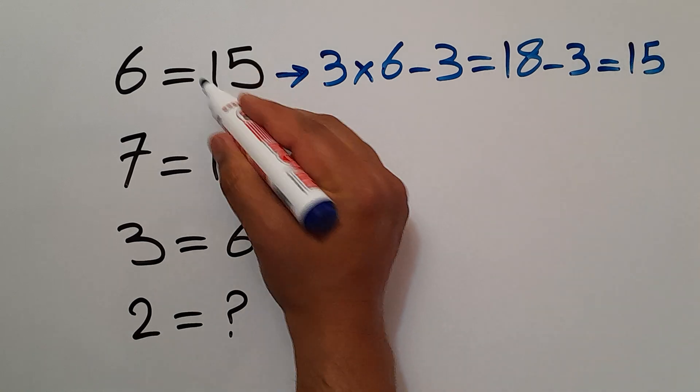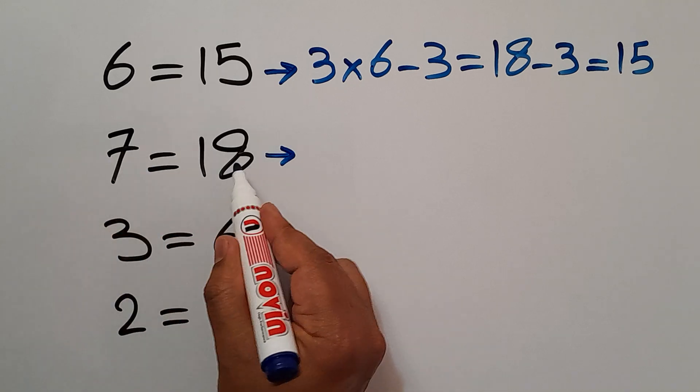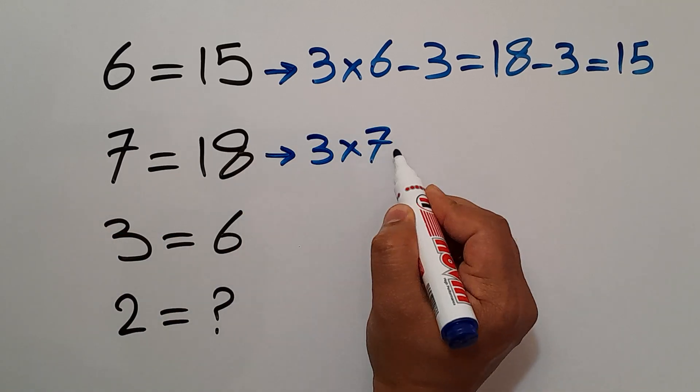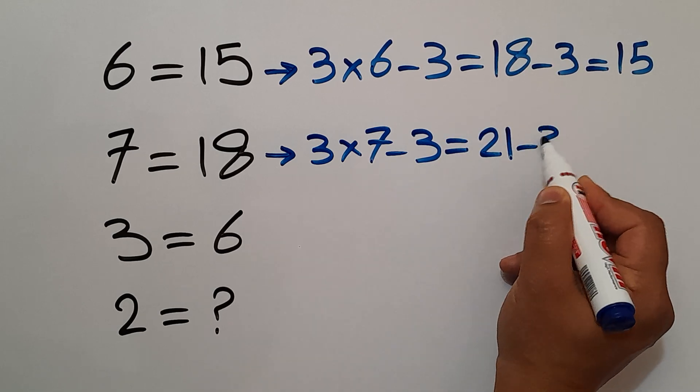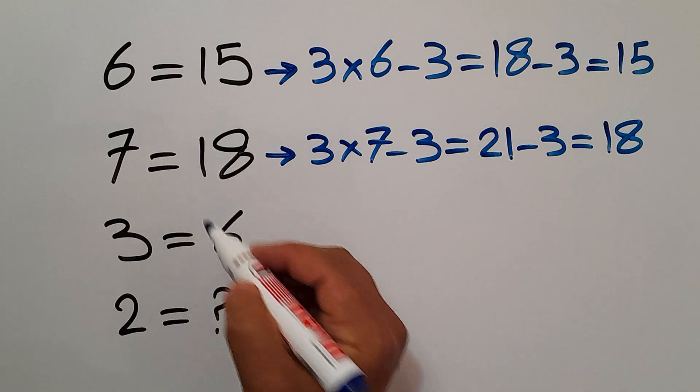In the second line, we have 7 and 18. 3 times 7 minus 3 gives us 21 minus 3, which equals 18, the right-hand side number.